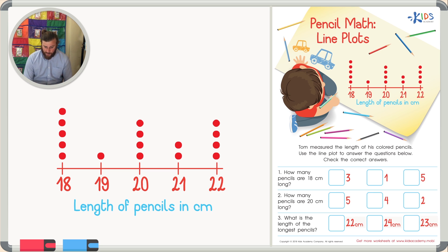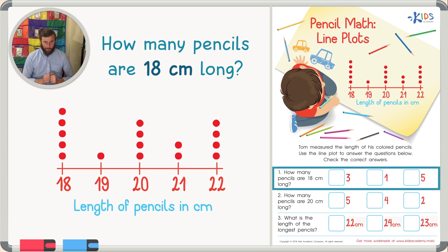Let's look at the first question. Number one says, how many pencils are 18 centimeters long? We're going to go right to the number 18, and we're lucky it's our first number. Now, I remember when we learned about line plots, we learned that each dot, or each x, really represents just one. In this case, each dot just represents one colored pencil.